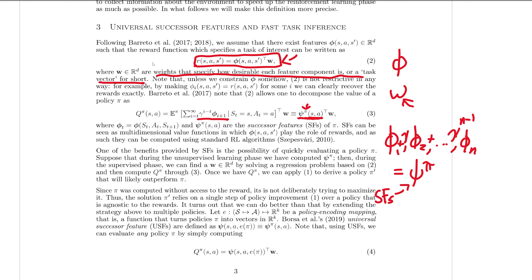I've defined psi. Now we're doing the same thing but with psi — we take psi of pi and take the dot product with this w task vector. What's very interesting is that we get Q of pi. What is Q of pi? If you're not familiar with this, it's just how good this action is if we're in this state — essentially how good a certain move is, or what is the expected discounted sum of rewards that we'll get from it.